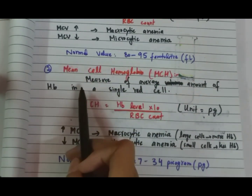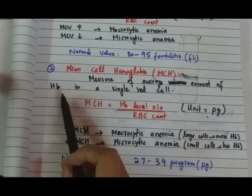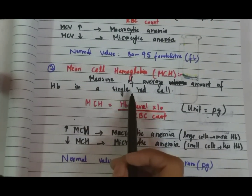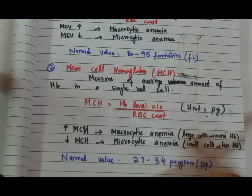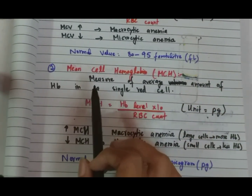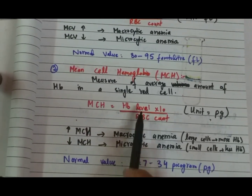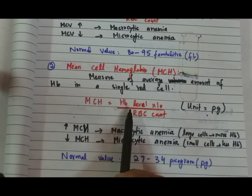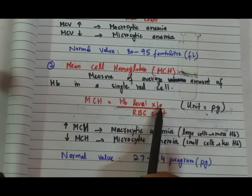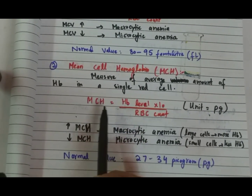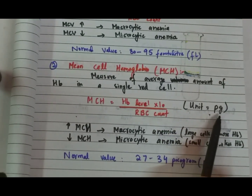The next index is mean cell hemoglobin — a measure of the average amount of hemoglobin in a single red cell. The formula is: hemoglobin level divided by RBC count, multiplied by 10. The unit is picogram.